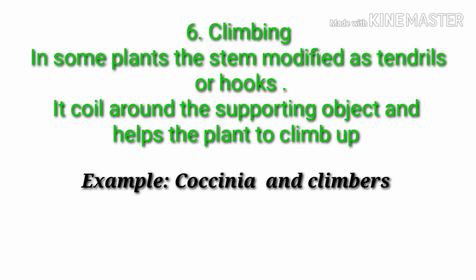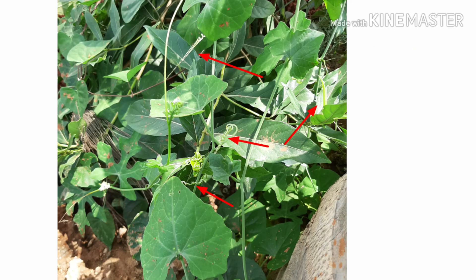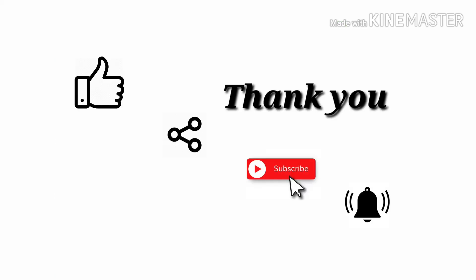Climbing is another secondary function. In some plants, the stem is modified into tendrils or hooks, which help weak plants to climb by coiling around a supporting object. An example is Coccinea and other climbers, where you can find tendrils coiling around neighboring plants. This concludes the topic of the functions of the stem.